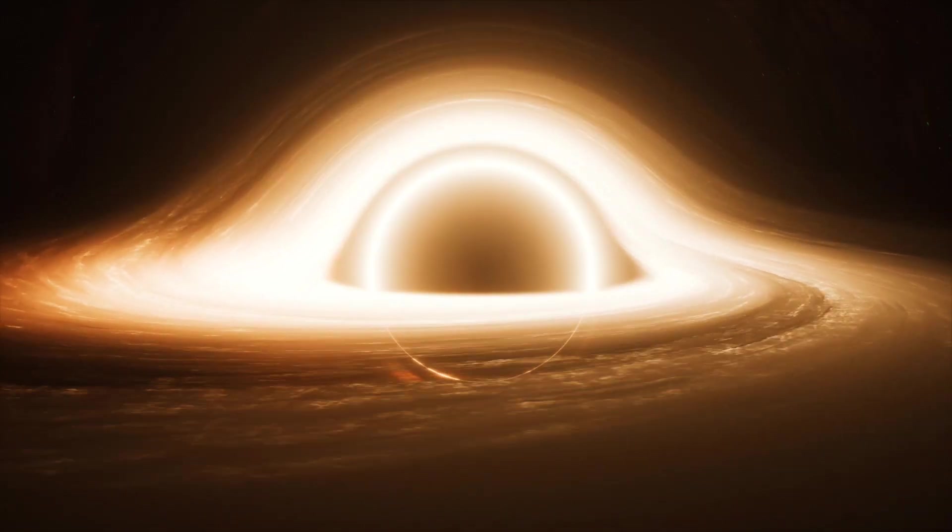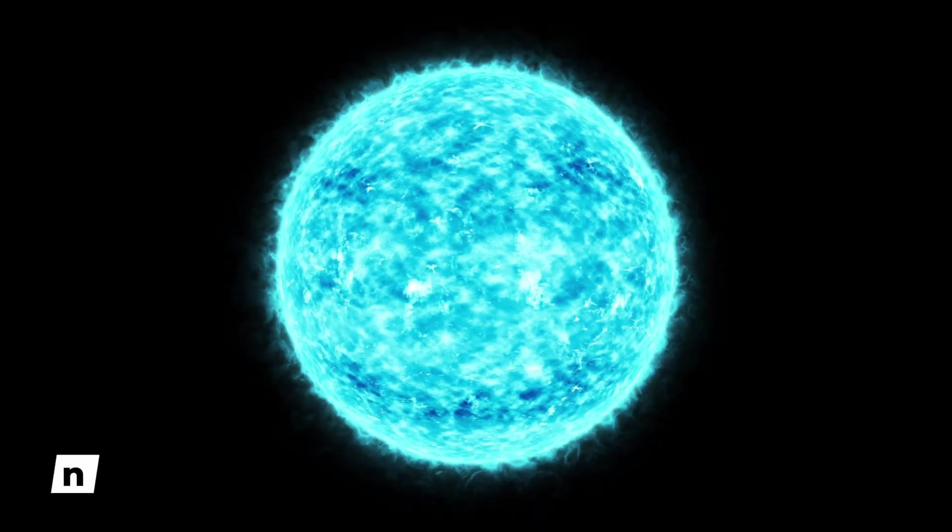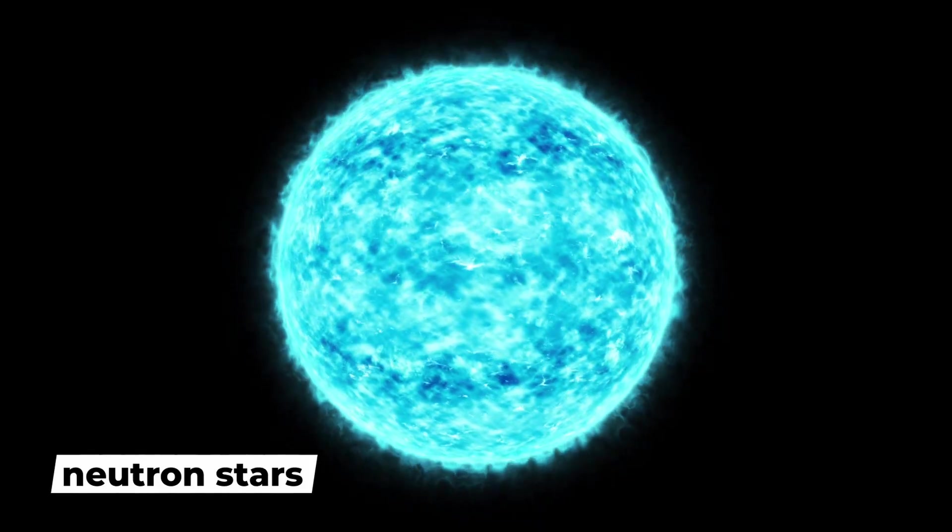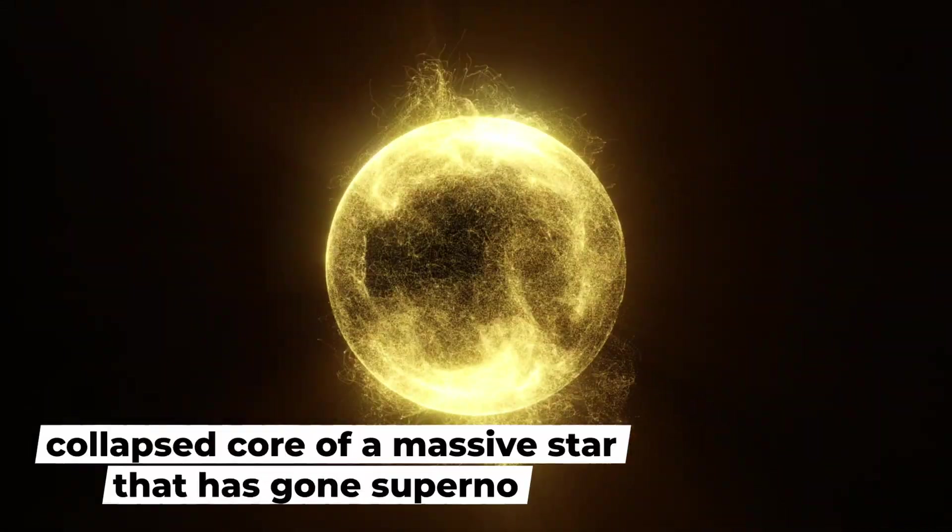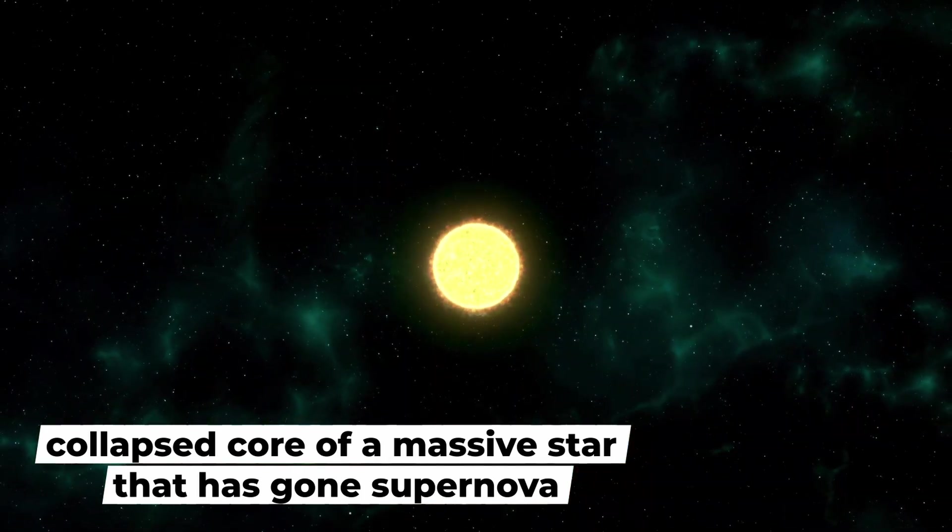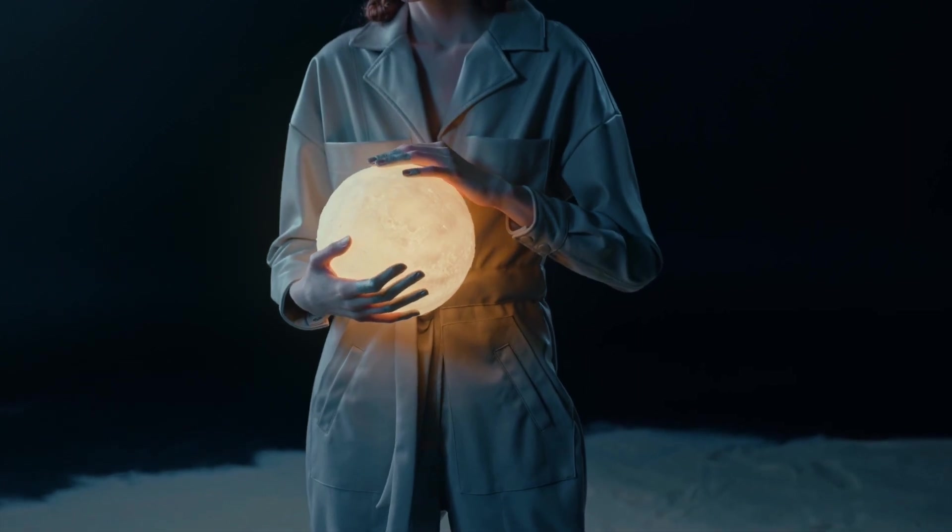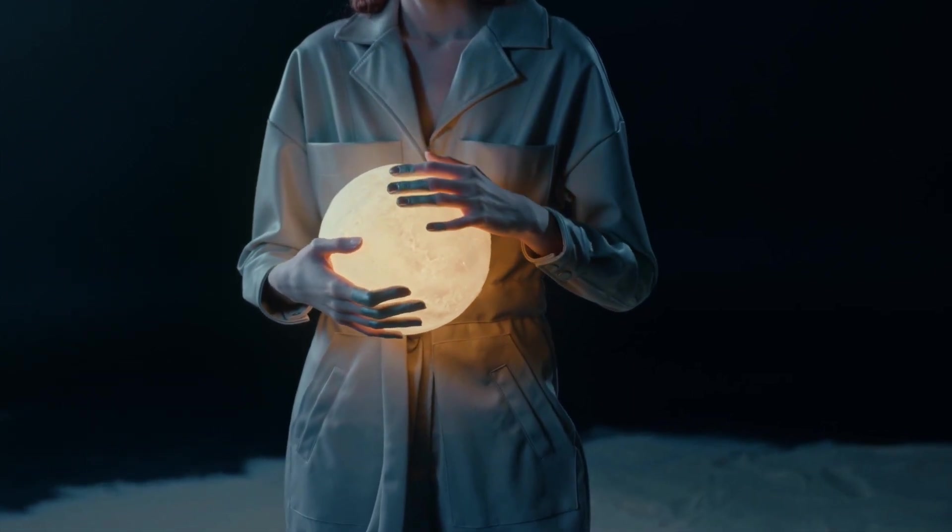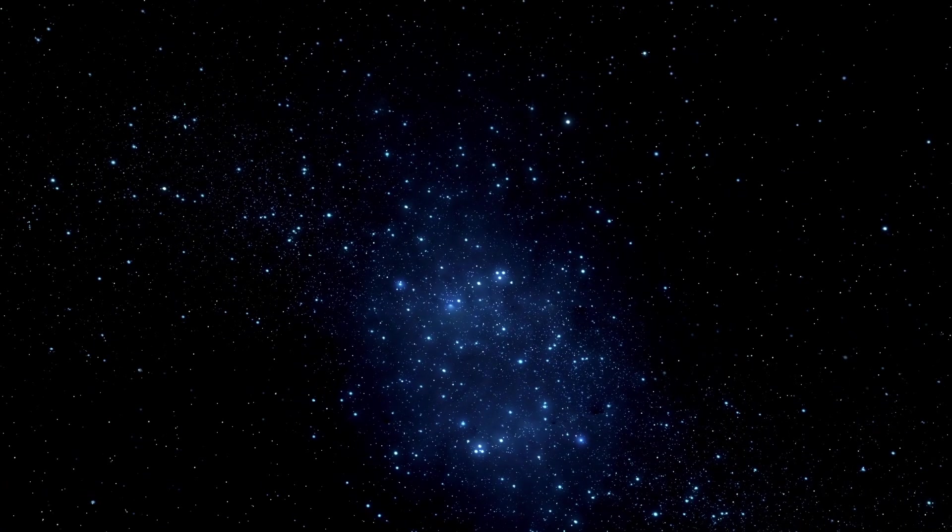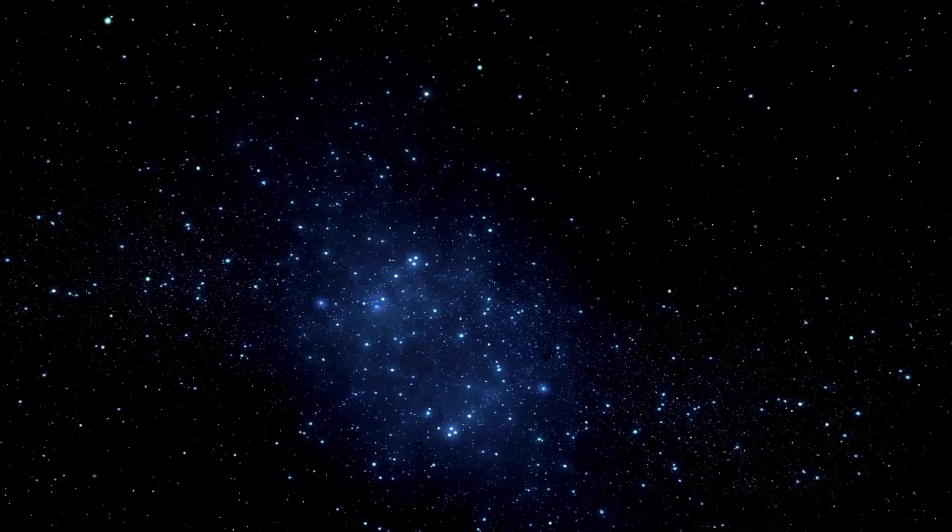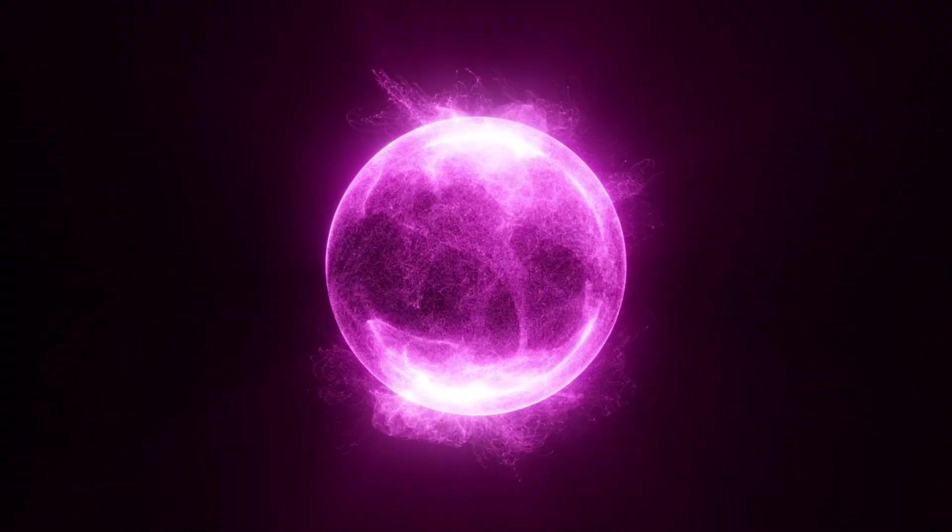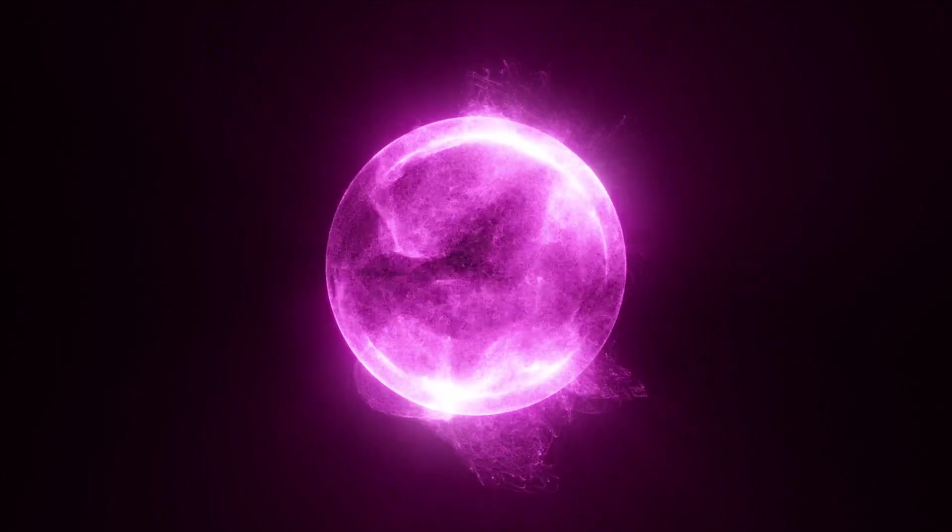To understand what a kilonova is, let's start with neutron stars. A neutron star is the collapsed core of a massive star that has gone supernova. Imagine squeezing the mass of the sun into a ball the size of a city, and you'll have a neutron star. These objects are incredibly dense and have strong magnetic fields, making them ideal for studying the fundamental physics of the universe.